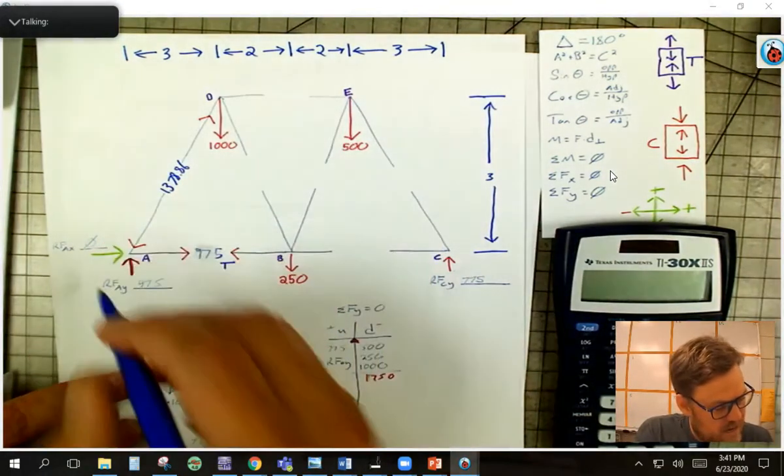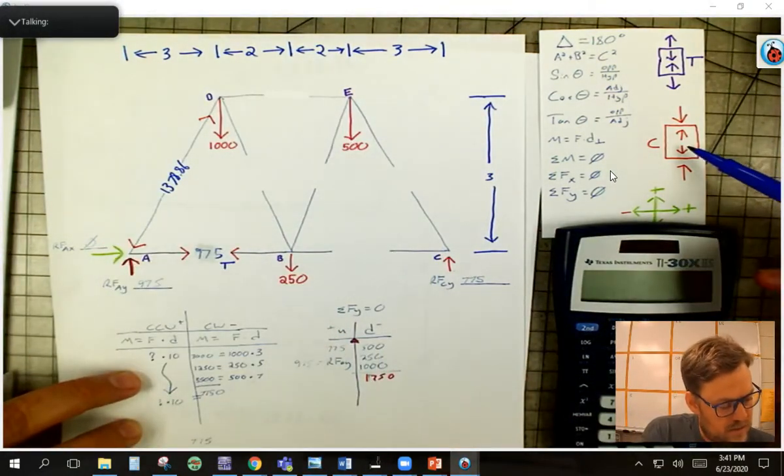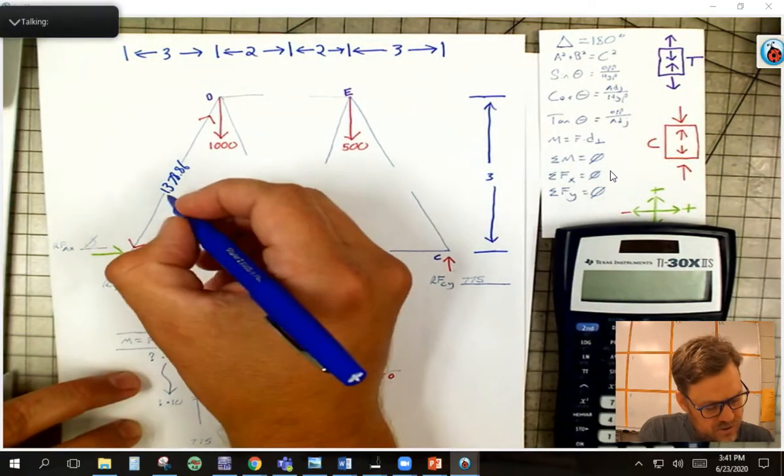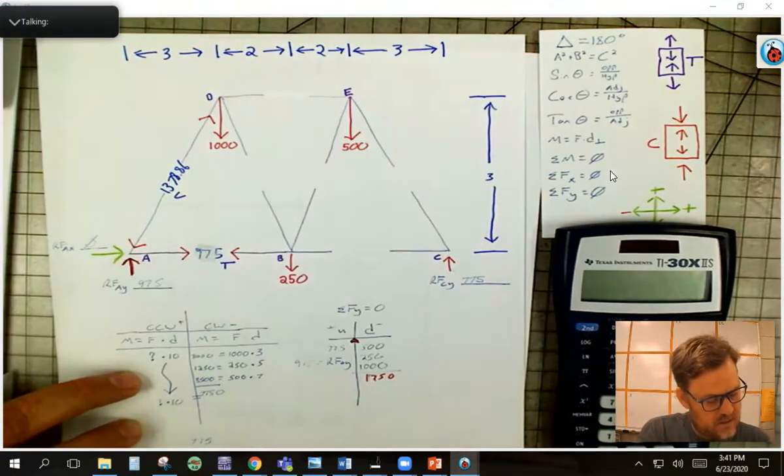These are squeezing out, because it's what's going on inside the member. So this one is in compression, so I can put a little C there next to that.